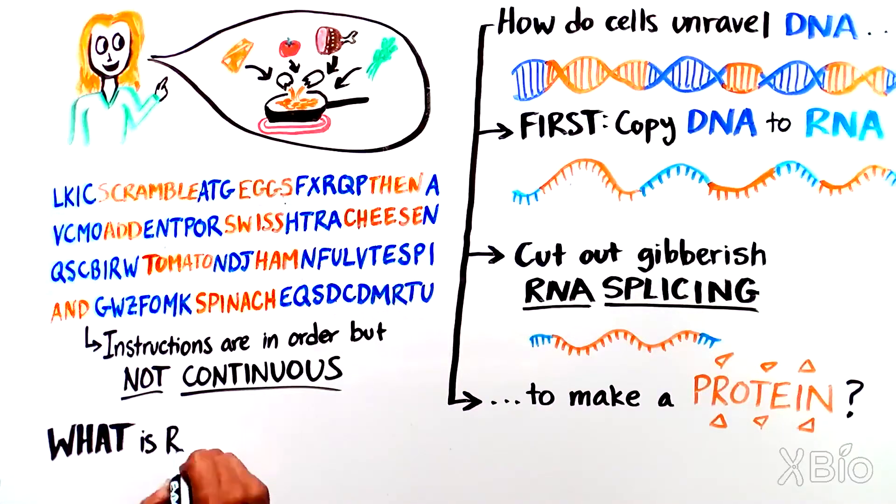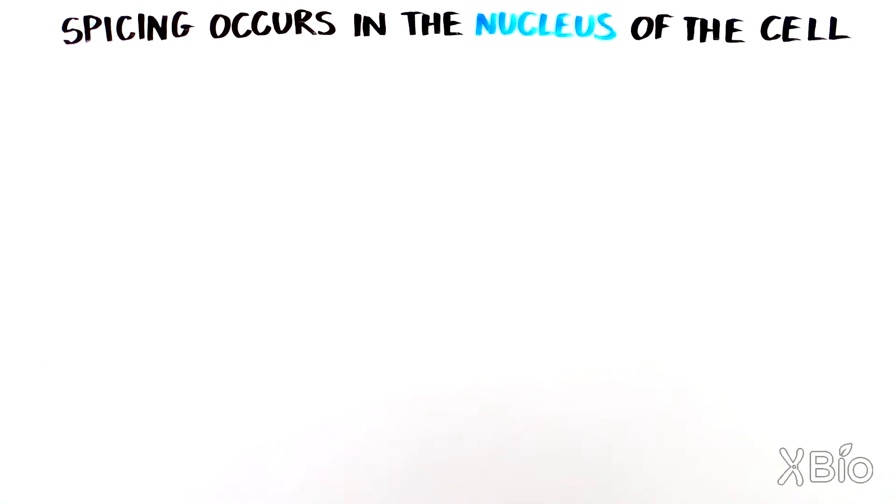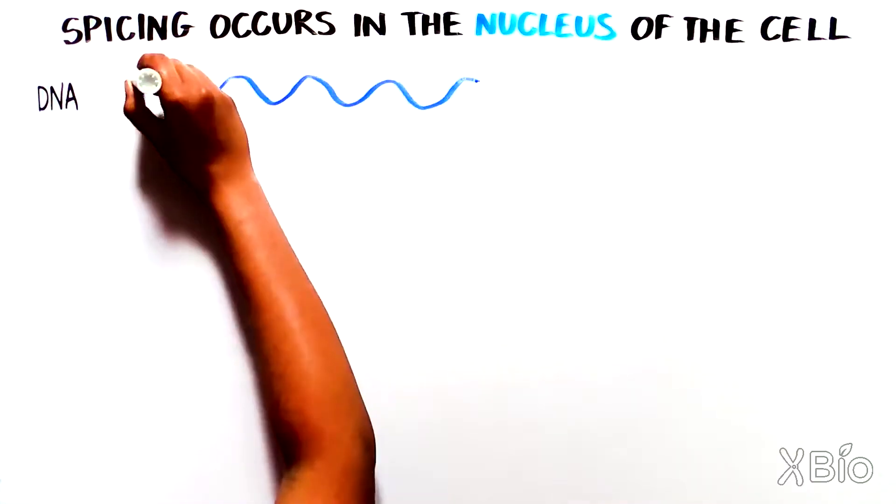Let's understand what an RNA is, how the process of splicing takes place, and why the cells bother storing and then cutting out all of the gibberish. To start to learn about the process of splicing, let's dive down into the nucleus of the cell, which houses our DNA.